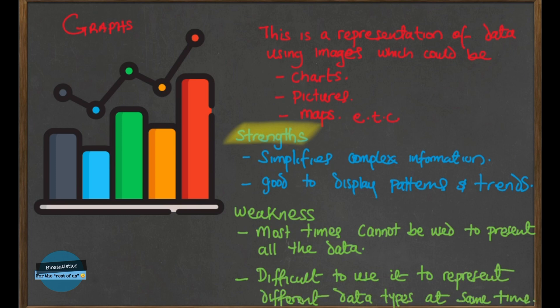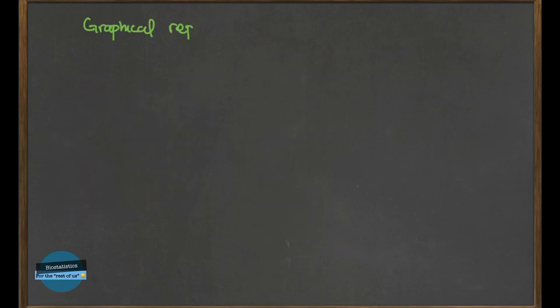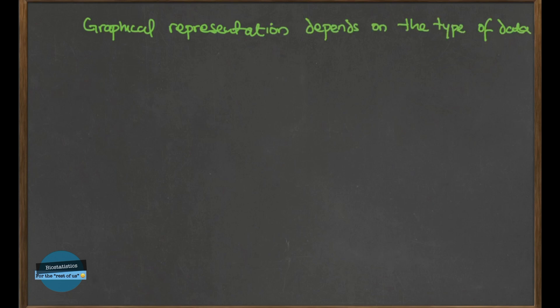Presenting different units on one graph would make it very difficult to understand and quite confusing. There are different types of charts that are frequently used, and one key point is that the type of graph you use will depend on the data type that you have. Graphical representation depends on the type of data that you have. Here we'll be talking about frequently used graph types, the types of data they are appropriate for, and the graph format appropriate for each data type, with examples.